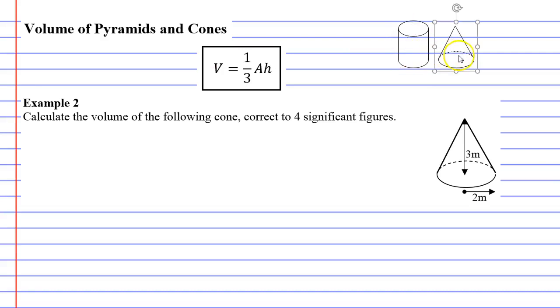So a cone is really one-third the volume of a cylinder. We're going to use the same formula again: volume equals one-third times area times height. We're going to start by finding the area of the base, which is πr².